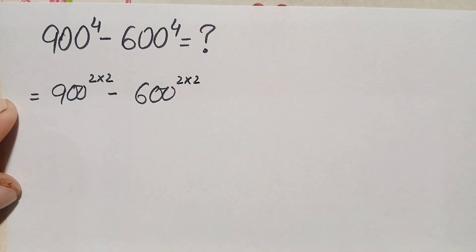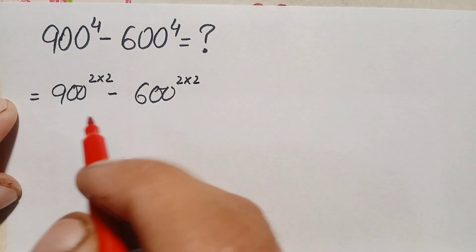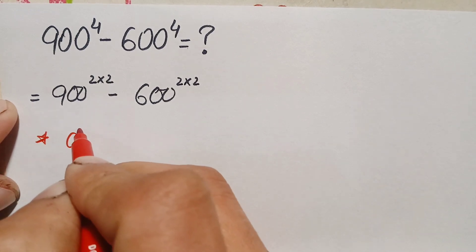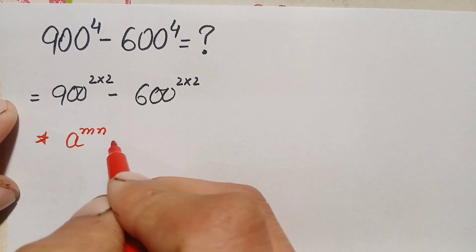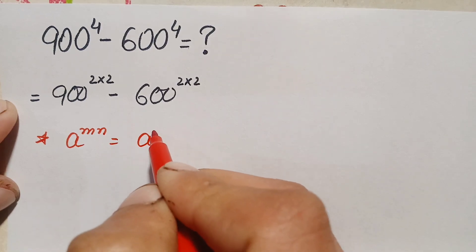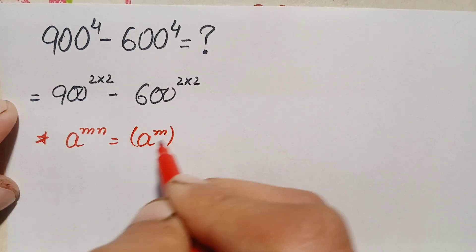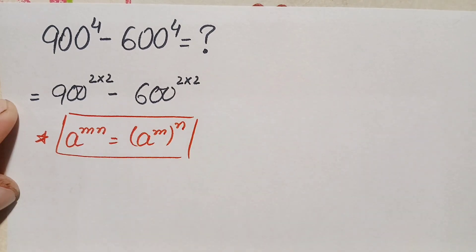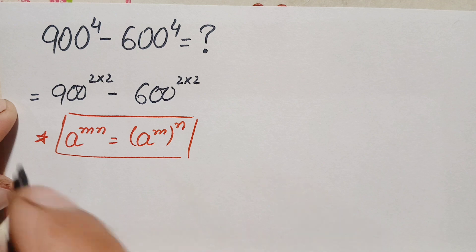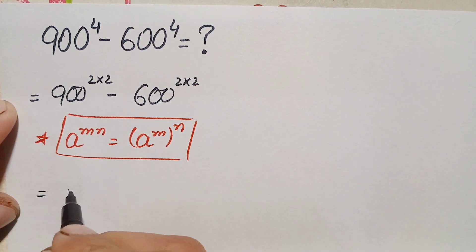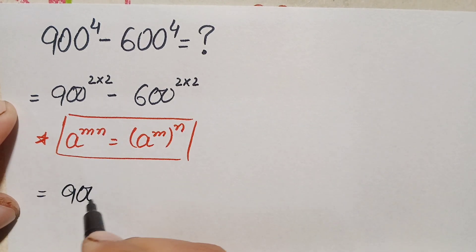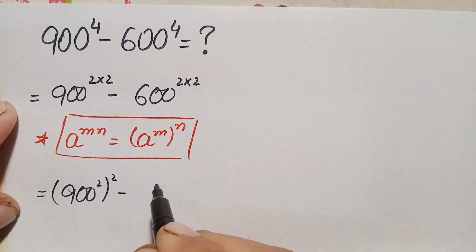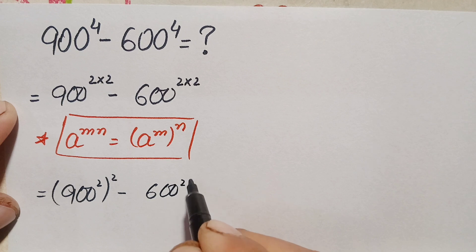Here in both terms we will use the exponential identity: a^(m×n) can also be written as (a^m)^n. Using this identity, we can rewrite these two terms as 900 raised to power 2, whole squared, minus 600 raised to power 2, whole squared.